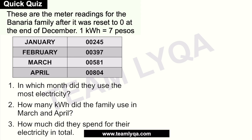Alright, let's see how you did. For this quiz, I didn't use meter readings since those were already covered in the first video — just the numbers, to discuss things more quickly. Question 1: in which month did they use the most electricity? Given: these are the meter readings for the Banaria family, reset to zero in December. Since it started at zero, when January's reading was 245, their consumption in January was 245 kilowatt hours.